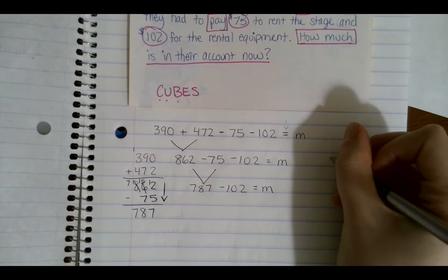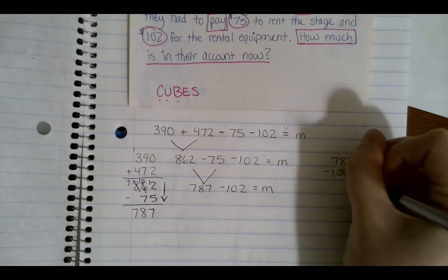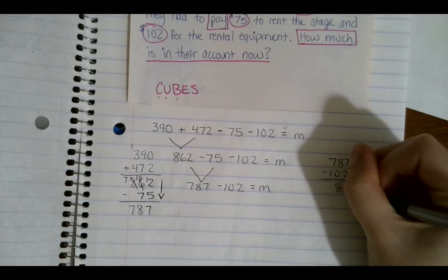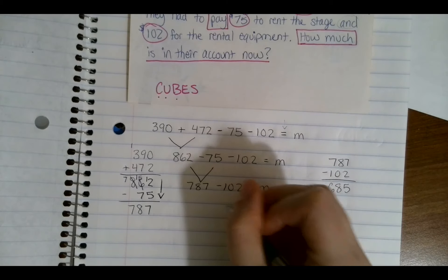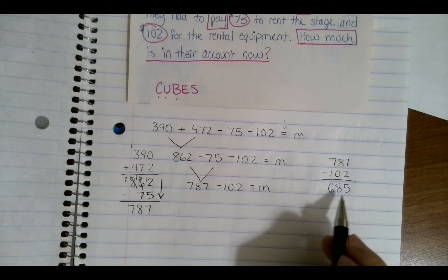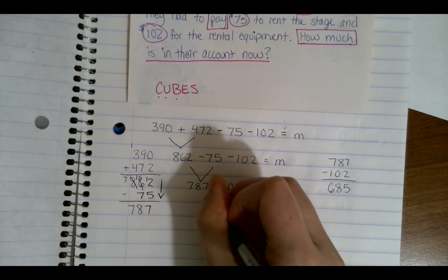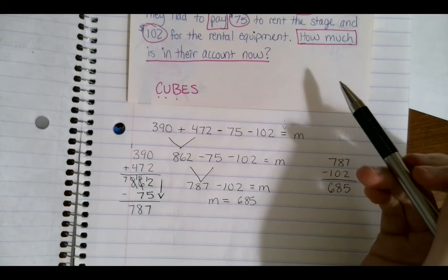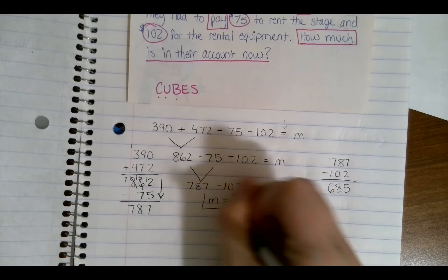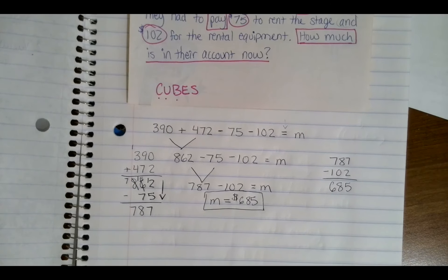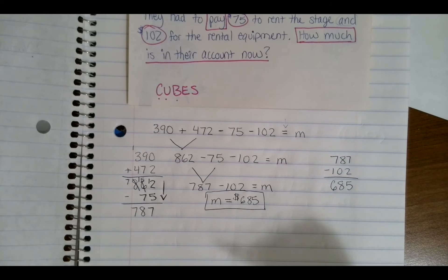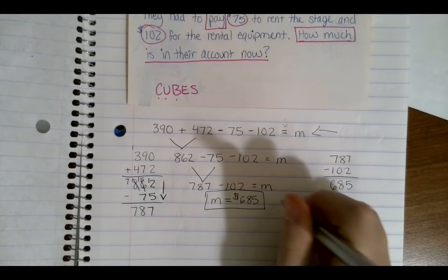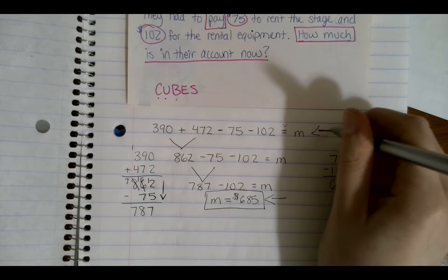Now I have 787 minus 102 equals m. Bringing it over since I have room: 7 minus 2 is 5, 8 minus 0 is 8, 7 minus 1 is 6. So I can write 685 = m, or m = $685. That is my final answer. A lot of the time on these lessons — especially on state tests — they're looking for the equation and they're looking for the answer to the unknown.